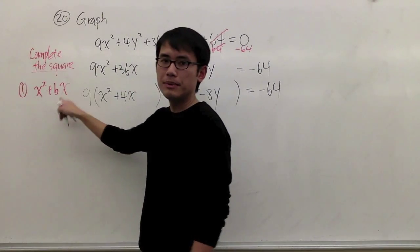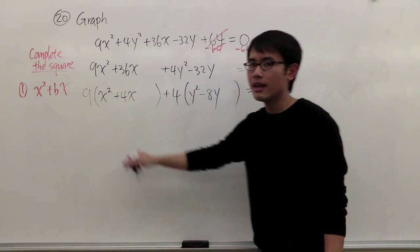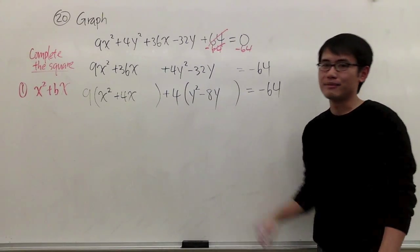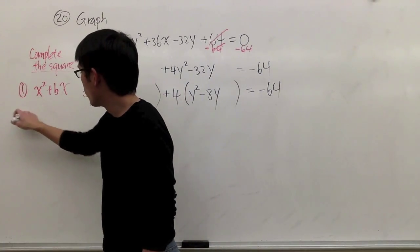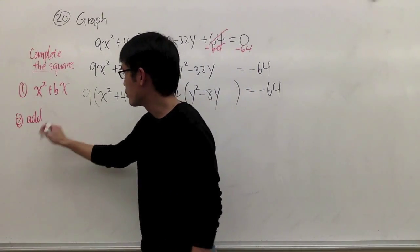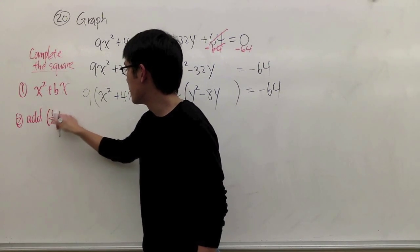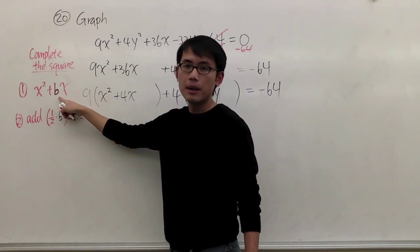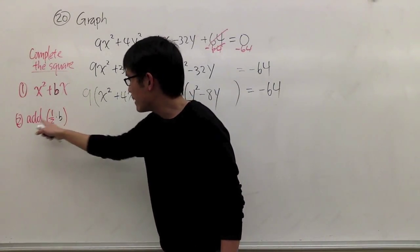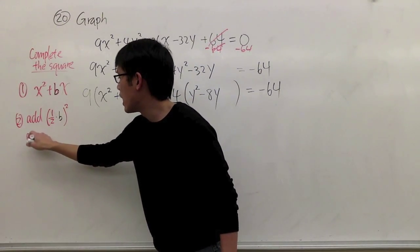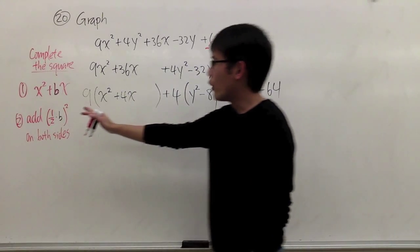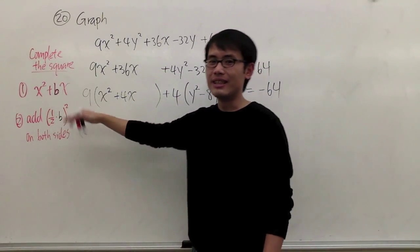This is what we want: x squared plus bx in the first parentheses, and y squared plus by in the second parentheses — where b is negative 8 for the y. Next, to complete the square, we are going to add the number one-half times b, squared, on both sides of the equation. So we take one-half of b and square that on both sides.